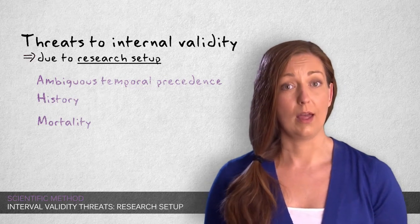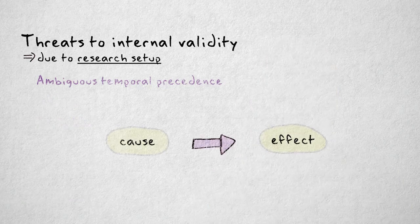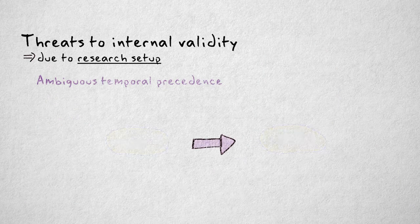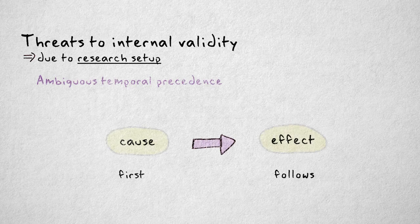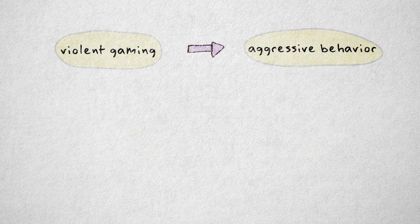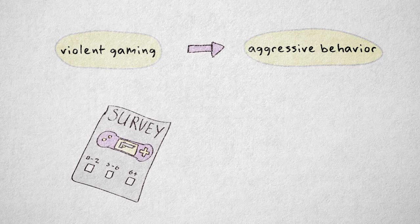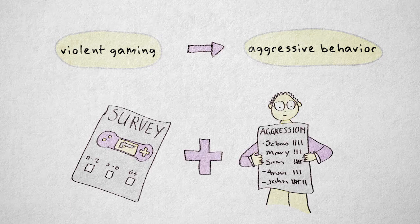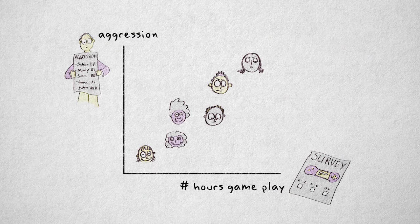An ambiguous temporal precedence in the hypothesized causal relation is just a fancy way of saying that it's unclear if the hypothesized cause actually precedes the observed effect. Suppose I'm interested in the relationship between playing violent video games and aggressive behavior. I ask high school students how many hours a week they play violent games, and I ask their teacher to rate their aggressiveness in class. What if I find a strong relation? Children who play violent games for many hours a week also show more aggressive behavior.